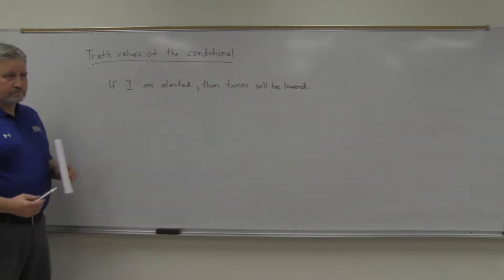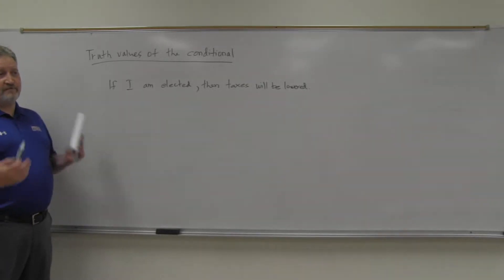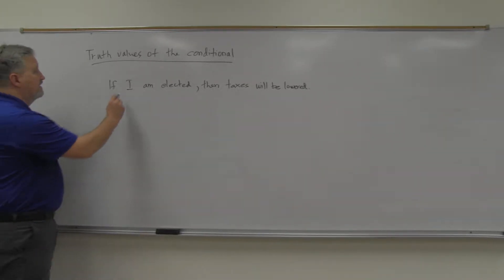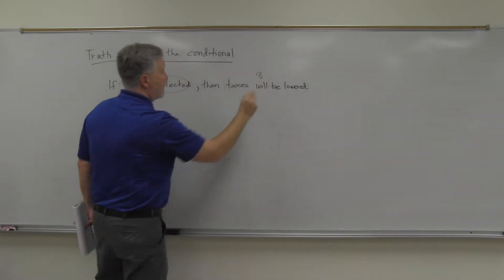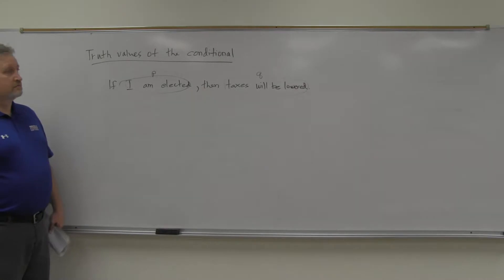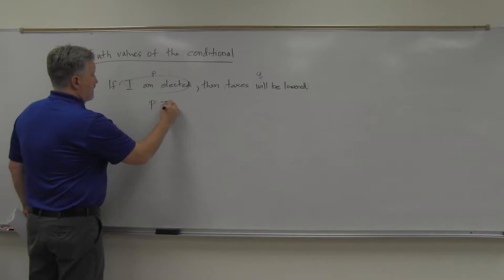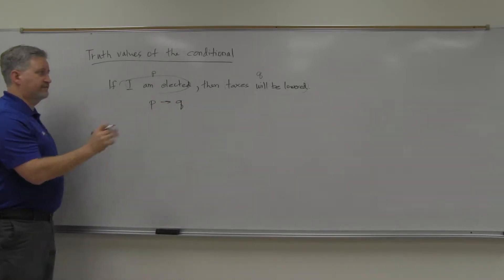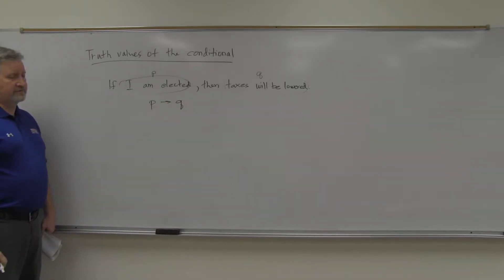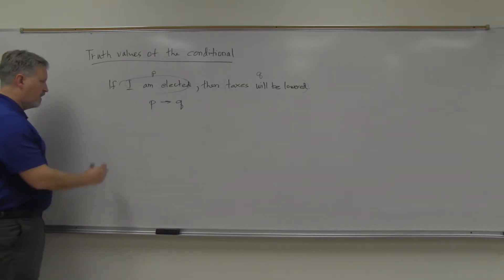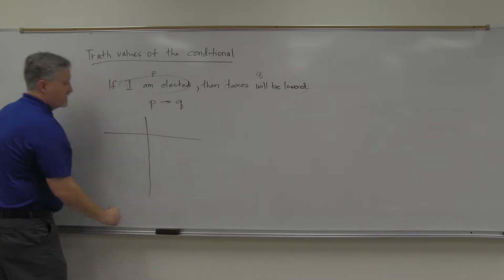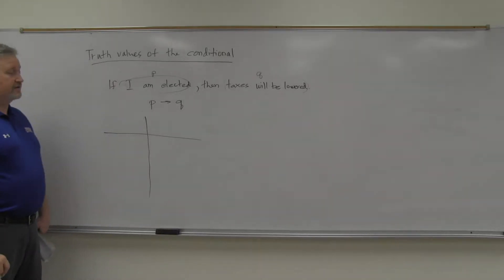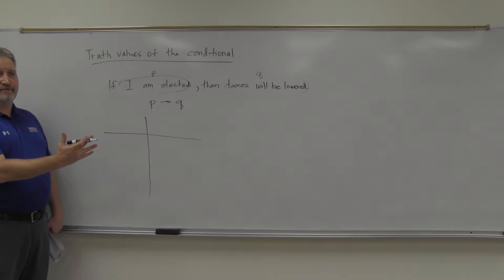This translates — we haven't done one where we translate — but if this is P and this is Q, how do I write that? P arrow Q. So if-then comes over to be P arrow Q. Let's just go through the true/falseness of each part. In other words, let's do a truth table here for P arrow Q.